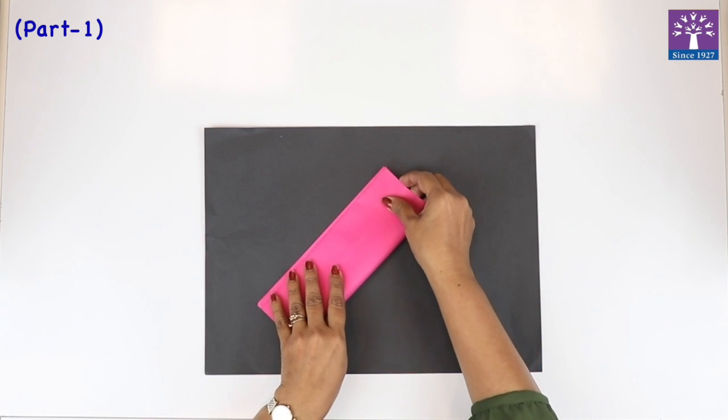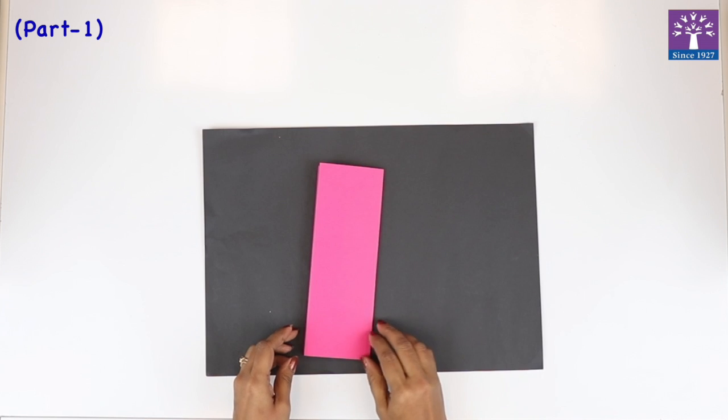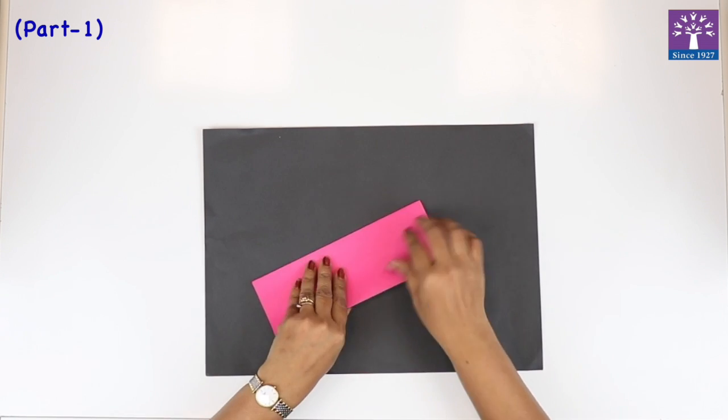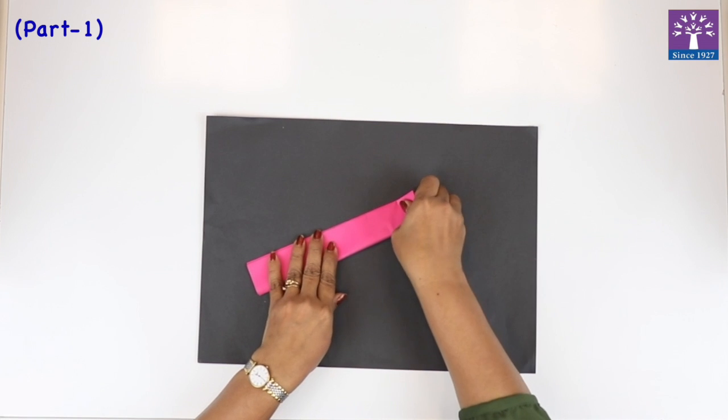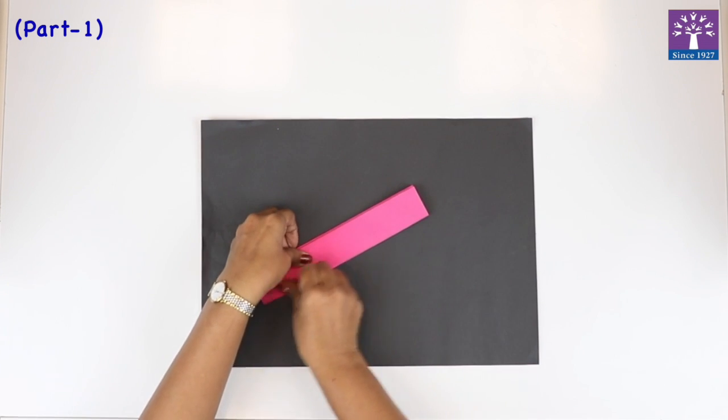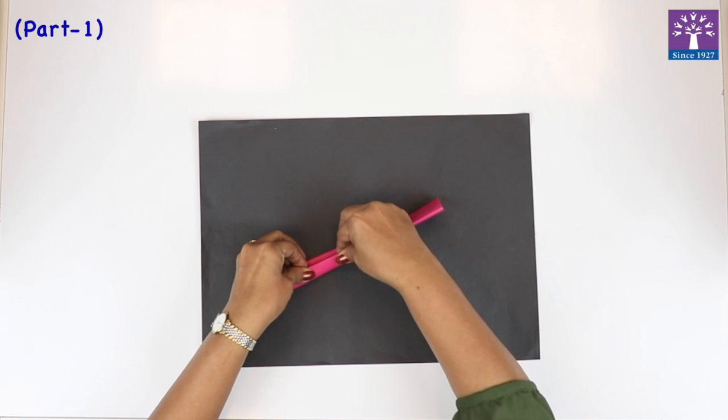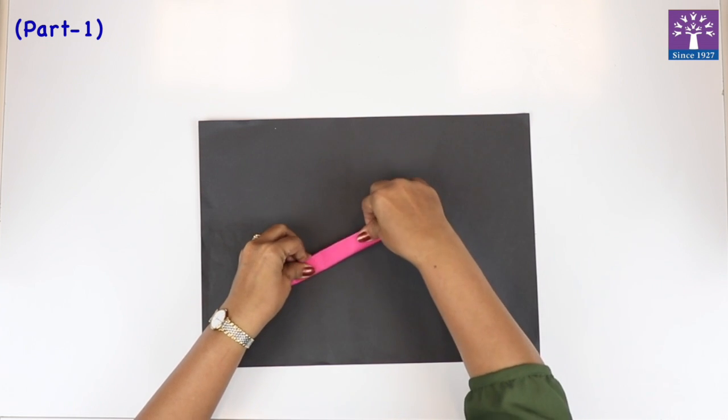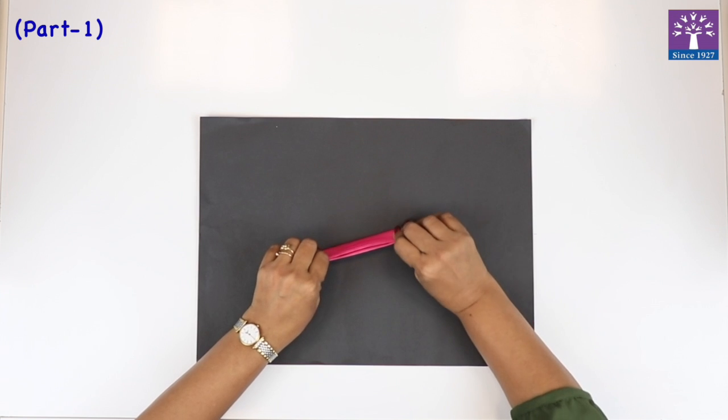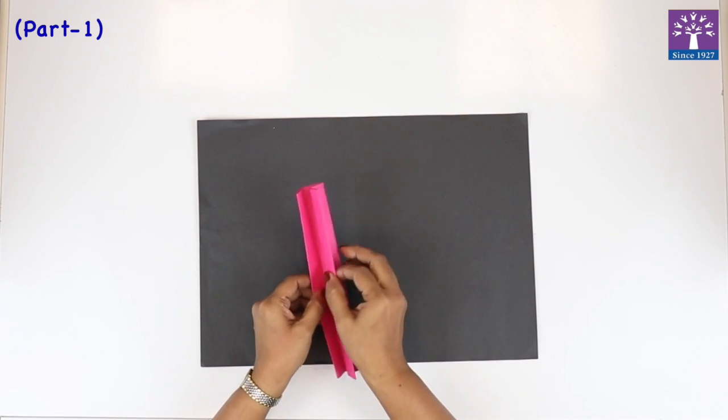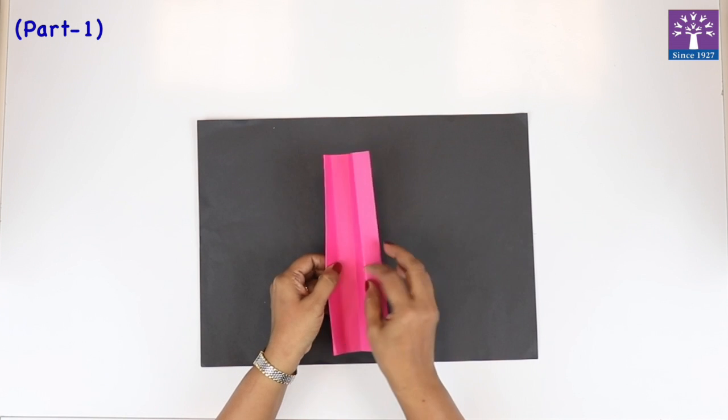Press the folds neatly. This is the second time, this is the third time, and one more time—that would be the fourth time. Do it very slowly because we've pressed the paper many times and now it has become a bit thick.